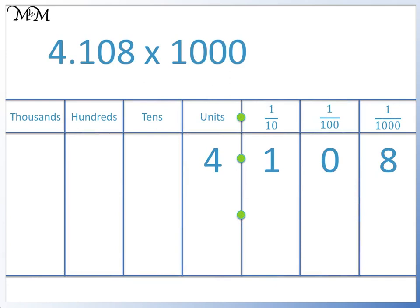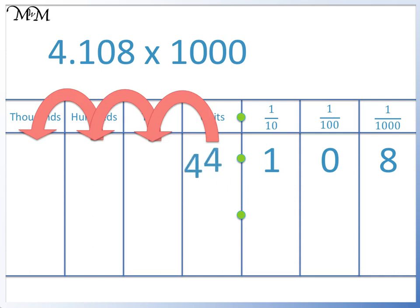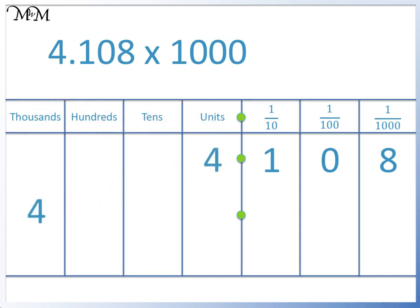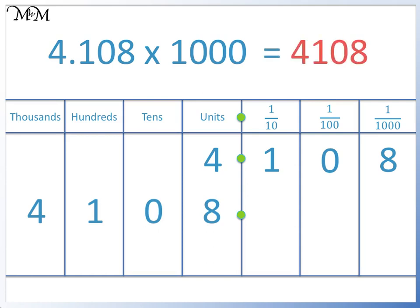4.108 times 1000. We move each digit 3 places to the left. We will start with the 4: 1, 2, 3. The last 3 digits will then follow. 4.108 times 1000 equals 4108.